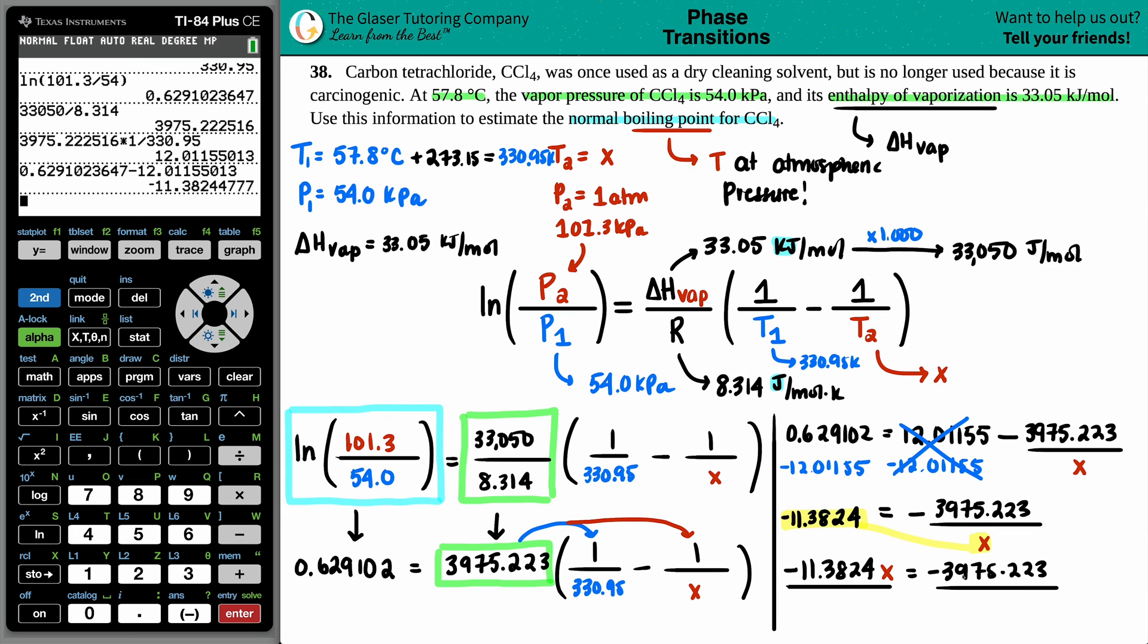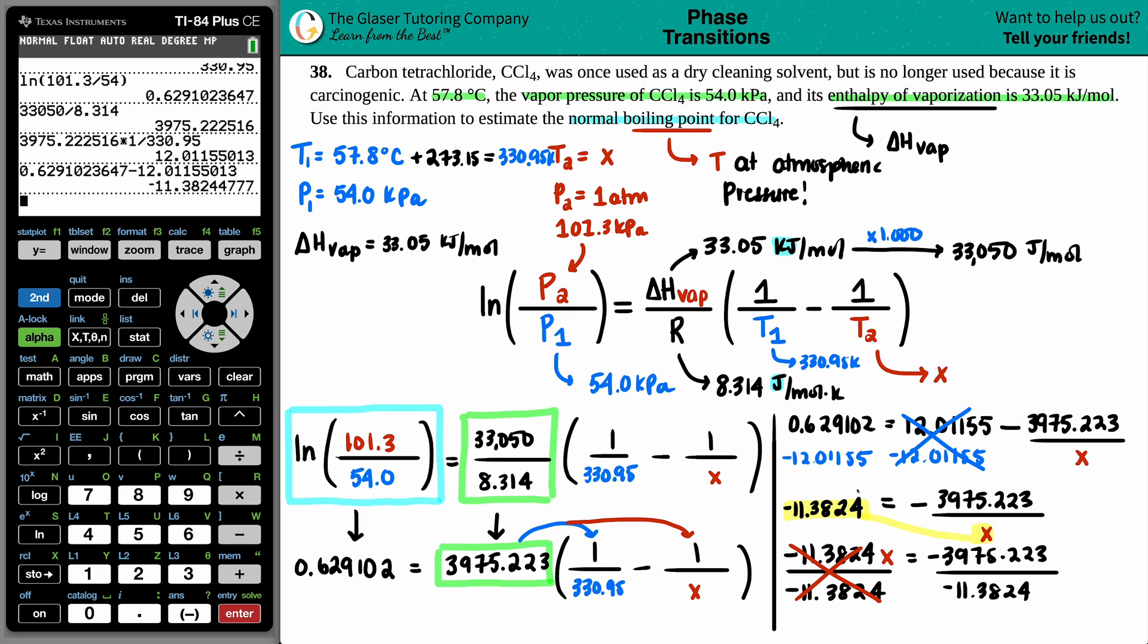We're at the end stages here. We know what to do—we're going to divide by that negative 11.3824 on both sides. This lovely will cancel out, we have x on this side. And negative divided by negative is a positive, so when I come over here I'm just going to grab this 3975 value and divide it by the 11 value. If you want to just times it by a negative 1 just to not see the negative in there, there you go. So we got 349, and that's in kelvin.